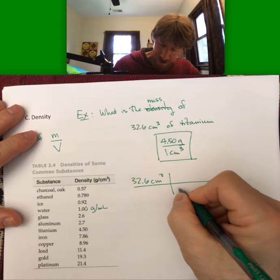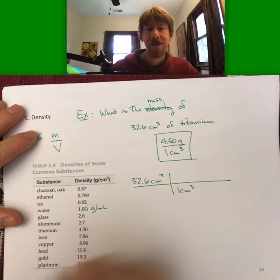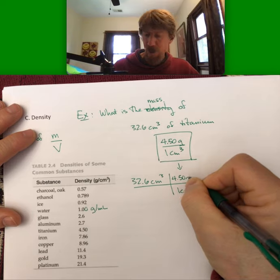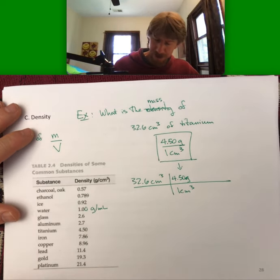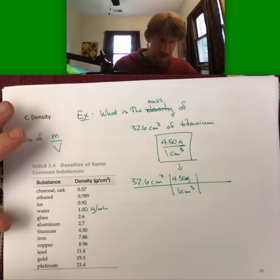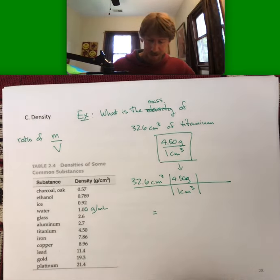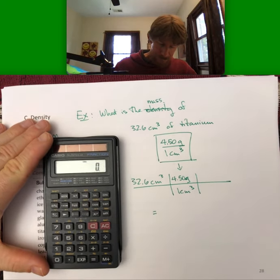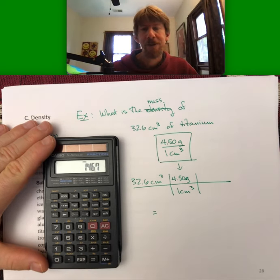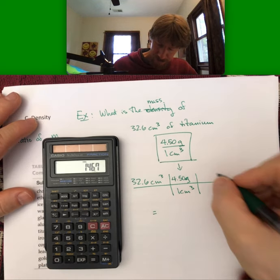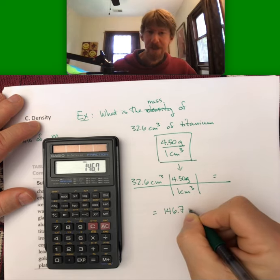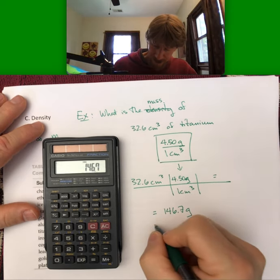And 4.50 grams per centimeter cubed, that goes on the top. And mathematically, multiply the numbers across the top, divide by the numbers on the bottom, which is just one, and we get 146.7 grams. Rounded to three sig figs, 147 grams.